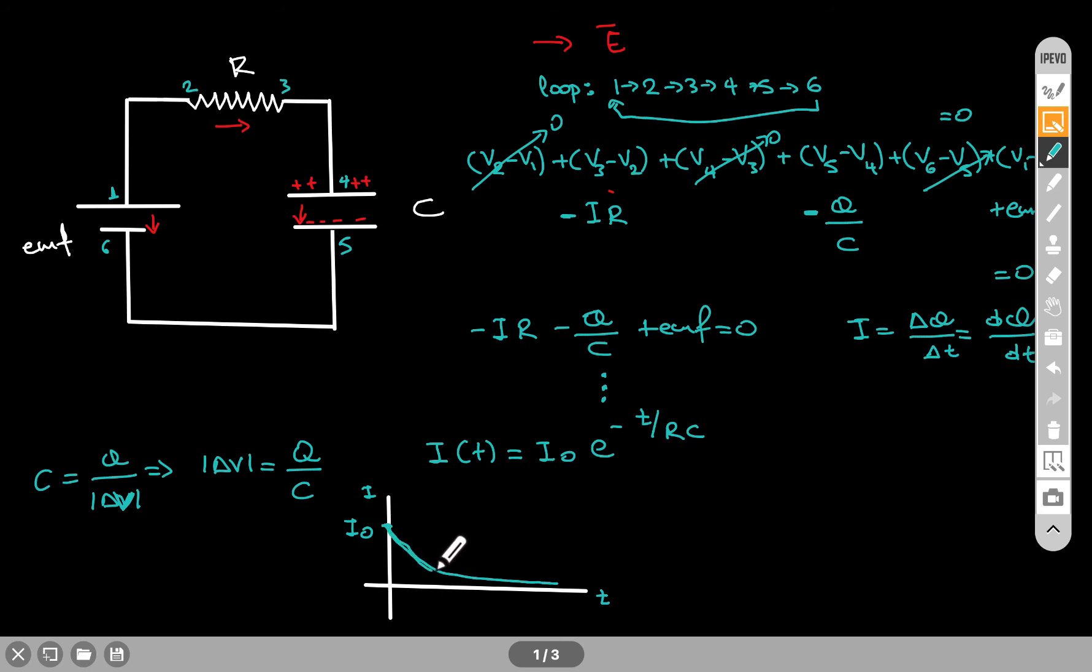Okay, this is not a great graph, but it's not a linear graph, certainly it's not a linear graph. It is an exponential decrease of the current.